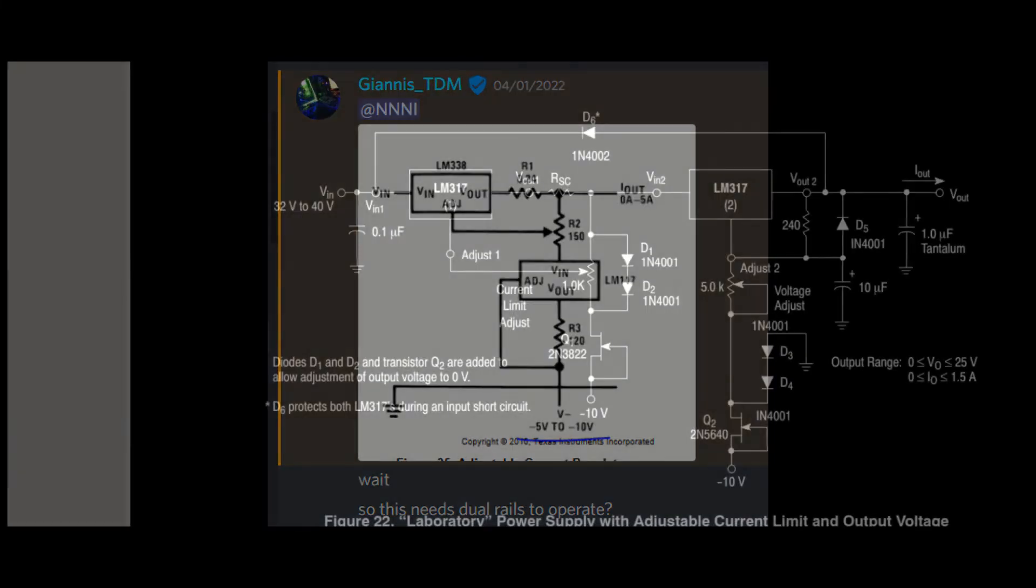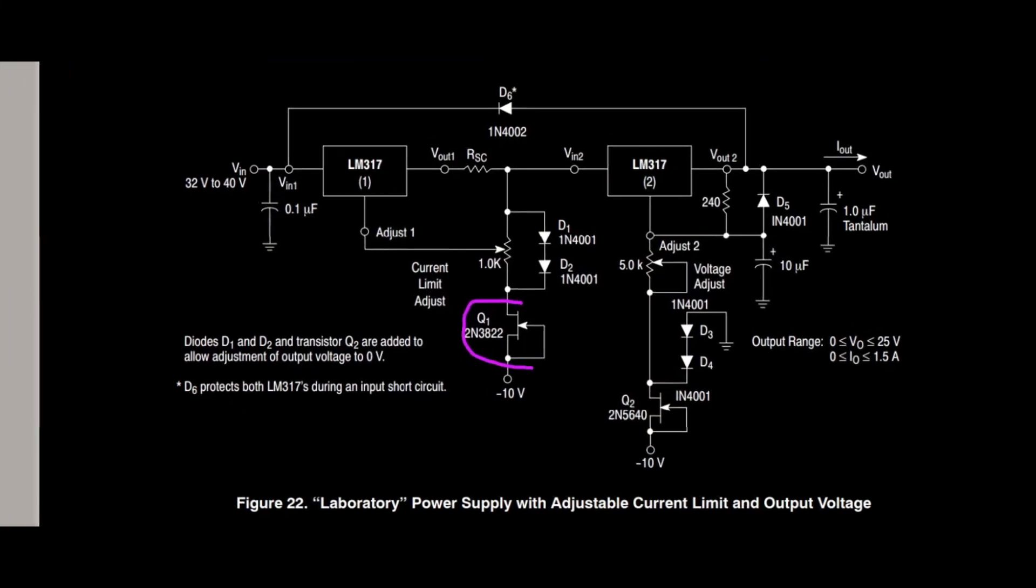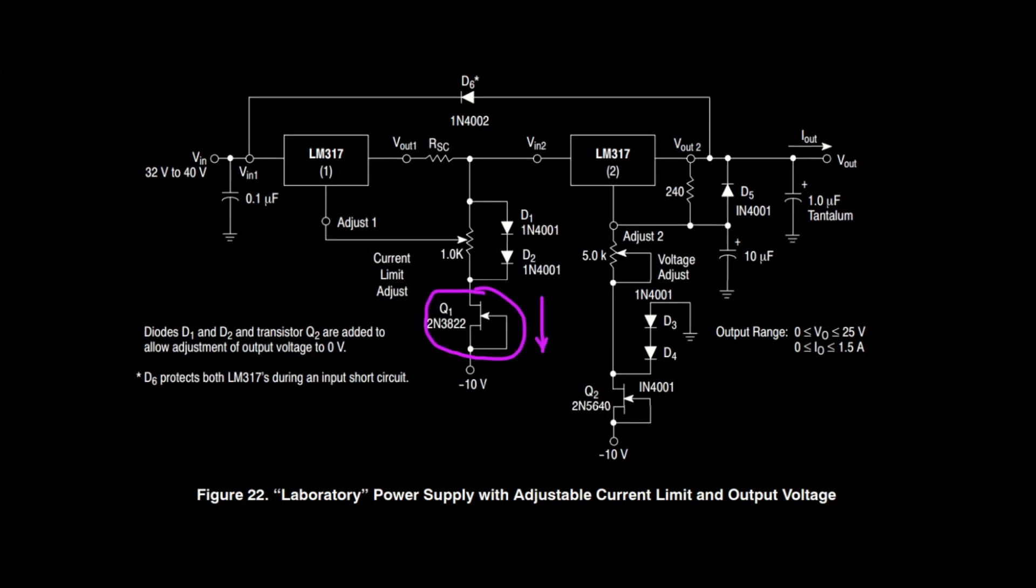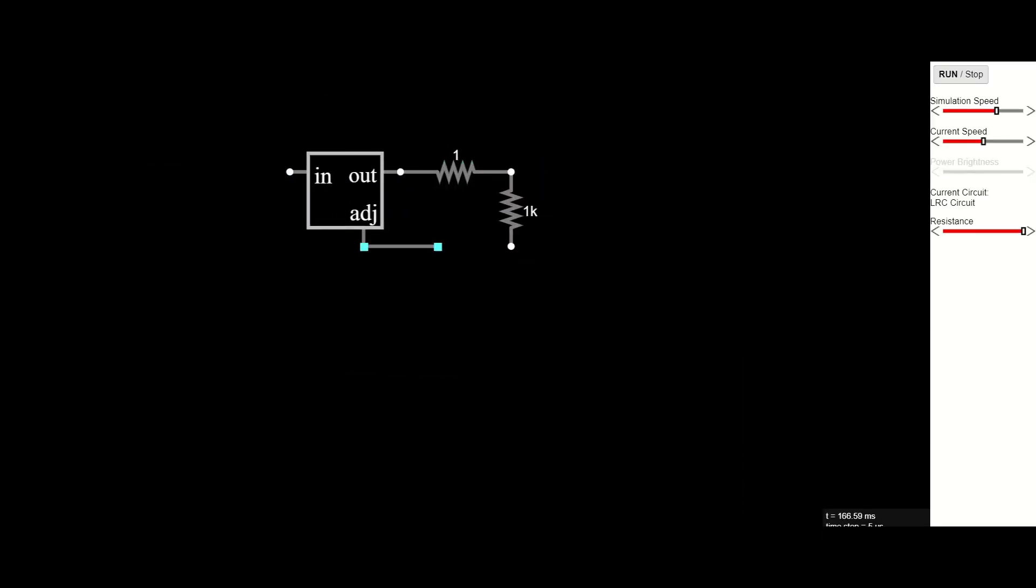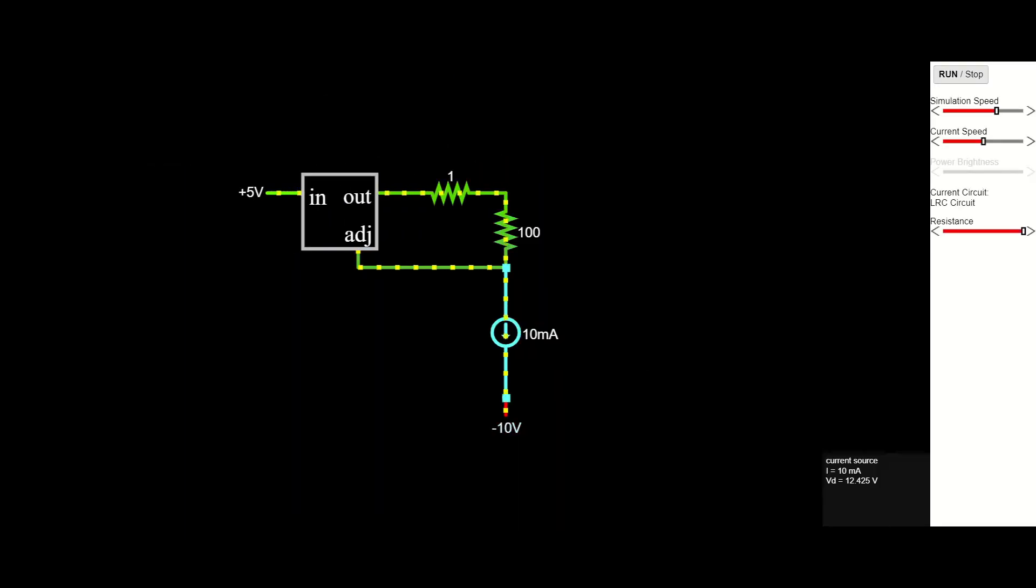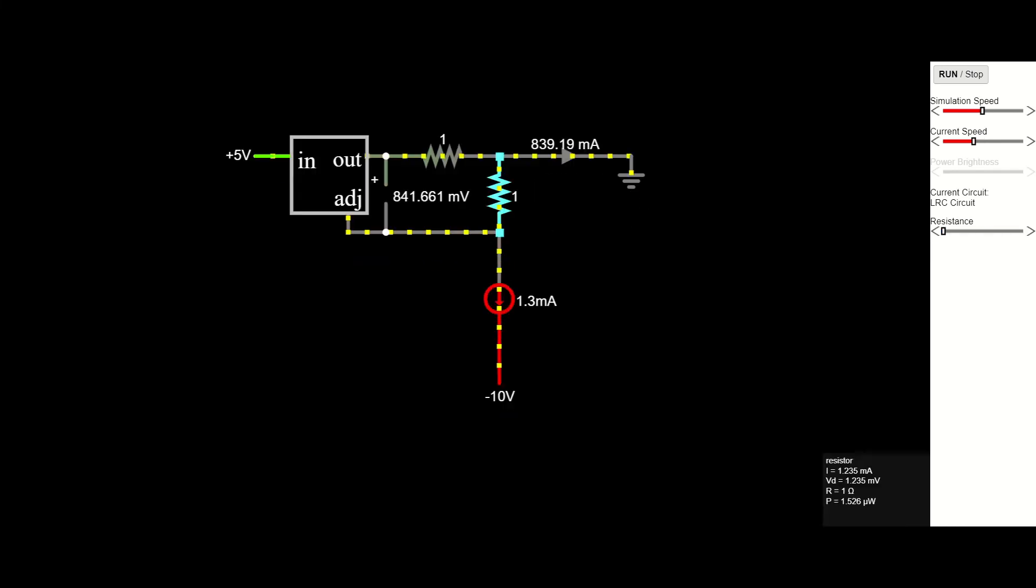The JFETs pull a constant current, keeping the reference pin biased regardless of output voltage. I was ecstatic to learn that Falstad finally included an LM317 model, which works kind of. Maybe the model needs a little more refining.